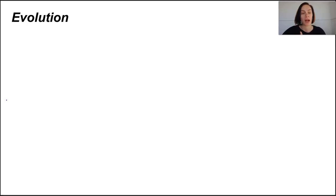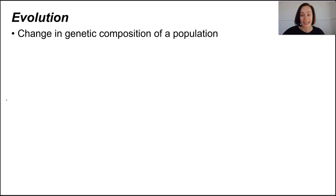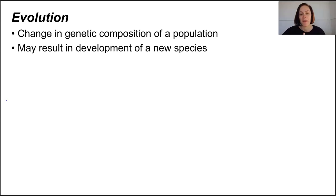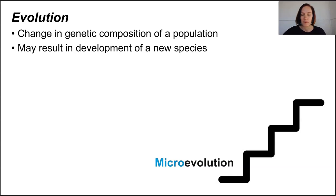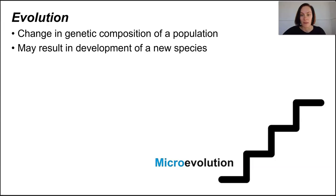Let's start by contextualizing our understanding of evolution. We know that evolution is the change in genetic composition of a population during successive generations, and it may actually result in the development of a new species. At a visible, immediate level, microevolution occurs when there's a small change of allele frequencies accumulating within a species or population — the types of alleles in the gene pool change, but not so much that they become a new species, just enough that we can see a variety of phenotypes.